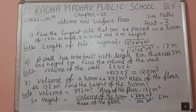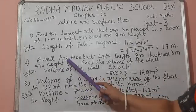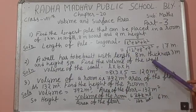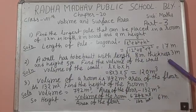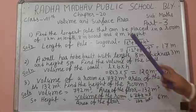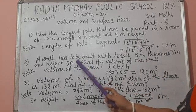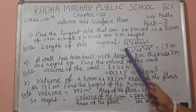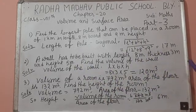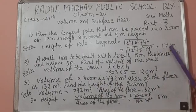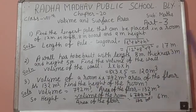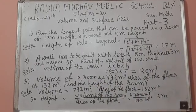Question number 2. A wall has to be built with length 8 meter, thickness 3 meter, and height 5 meter. Find the volume of the wall. Thickness here means breadth.